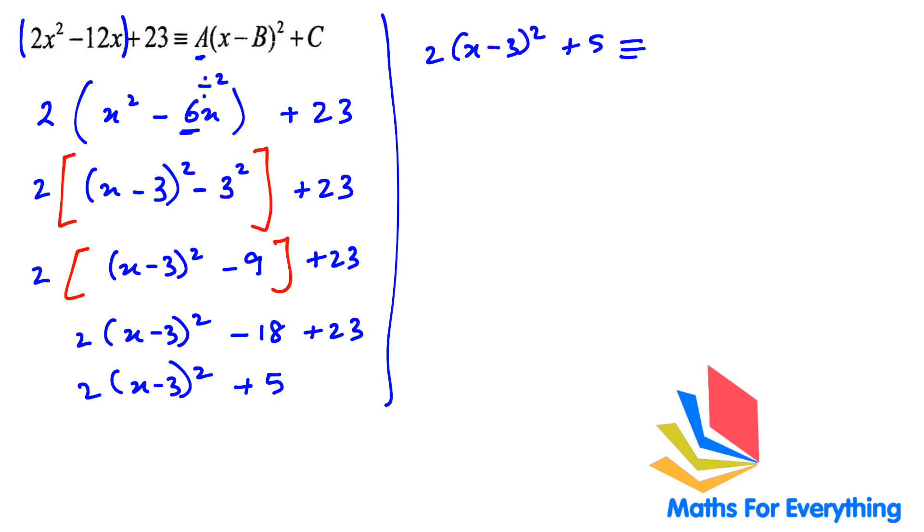Is identical to a(x - b)² + c. You can see that 2 is equal to a, 3 is equal to b.